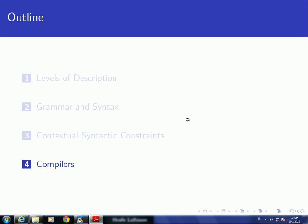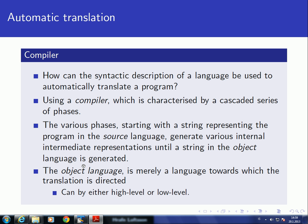Hello everyone. The last topic we want to discuss about the description of programming languages is compilers. The question is: how can the syntactic description of a language, in the form of a context-free grammar, be used to automatically translate the program? We can do this by using a compiler. A compiler is a program that takes a program written in some source language and generates another program written in the object language.